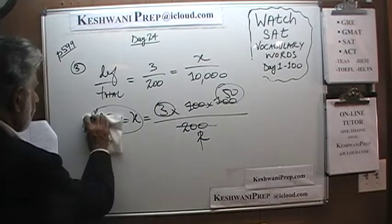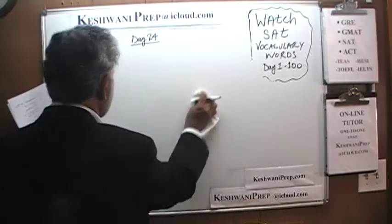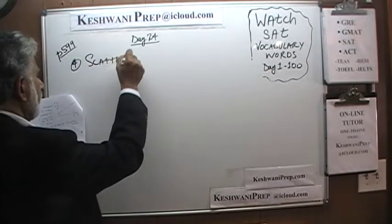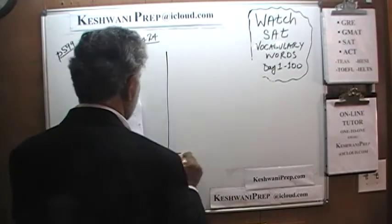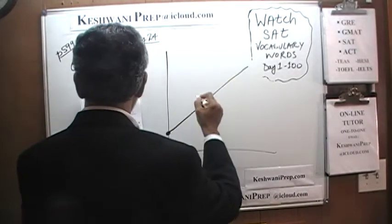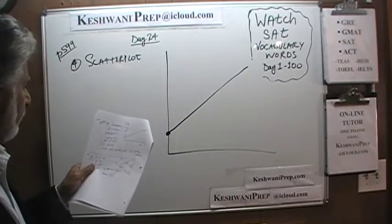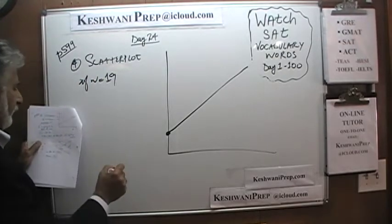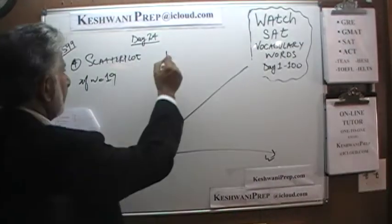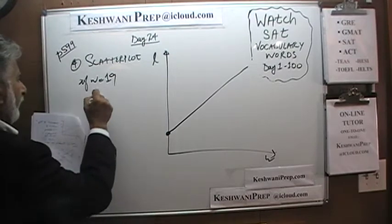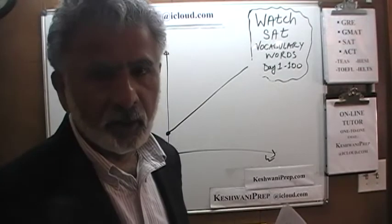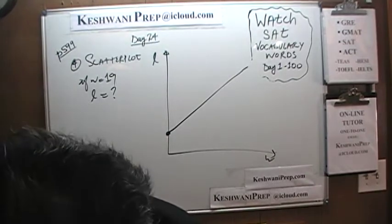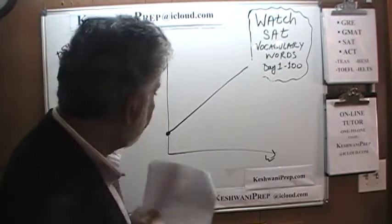In number four, we have a scatter plot. It starts at an intercept and rises up. The question is: if w equals 19 — width is shown on one axis and length on the other — what is the predicted value of length based on the scatter plot? I'm obviously not going to reproduce the scatter plot on the blackboard as it would take forever.